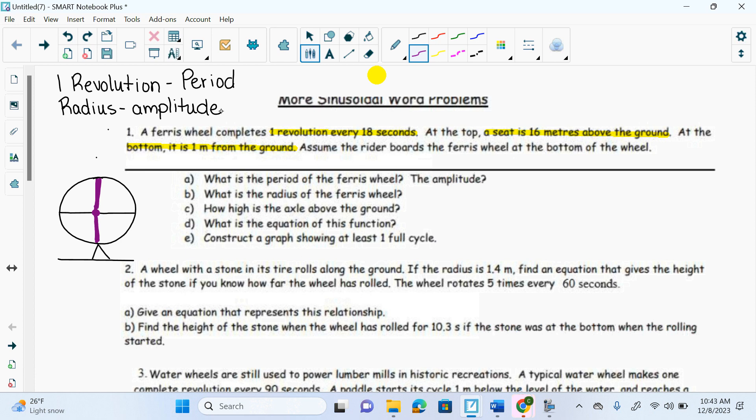And the center of this circle, what's that a fancy way of saying? If we were drawing the graph, it would go to max, to a min. It would be the midline, wouldn't it? Because this would be my minimum, this would be my maximum, and over time, it would show a graph of distance over time. So, the center of any wheel is also the midline.